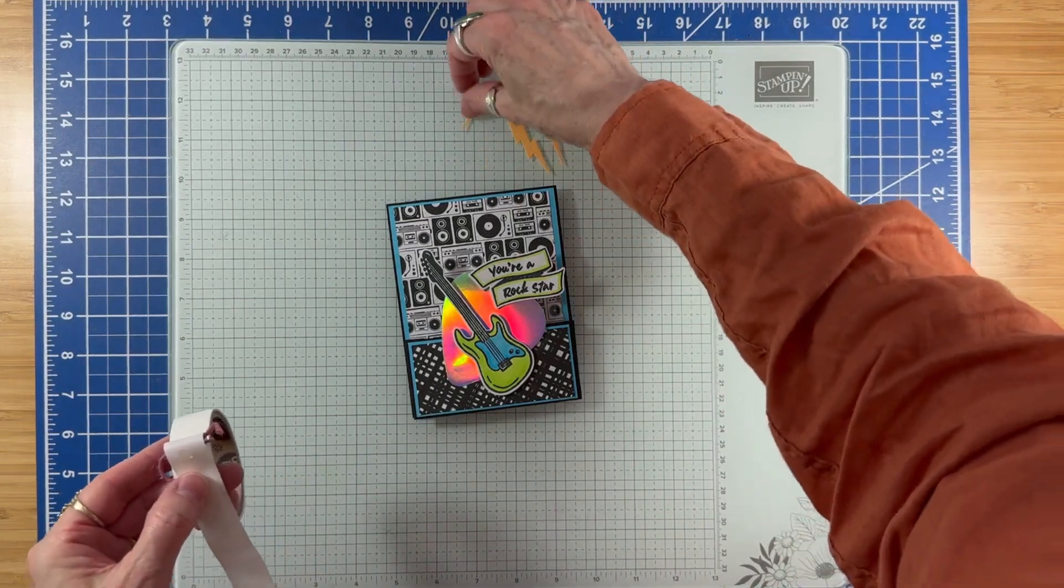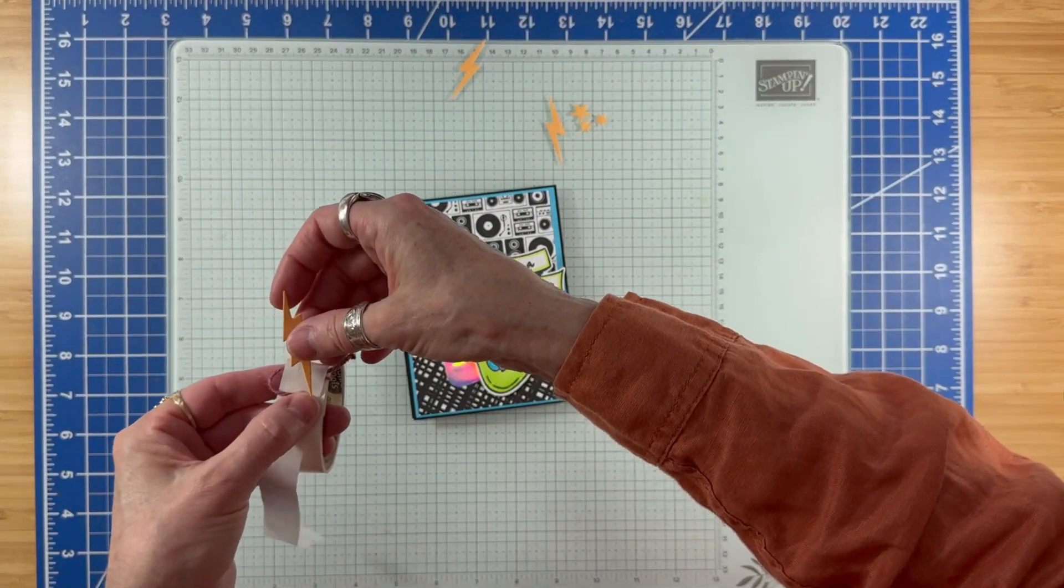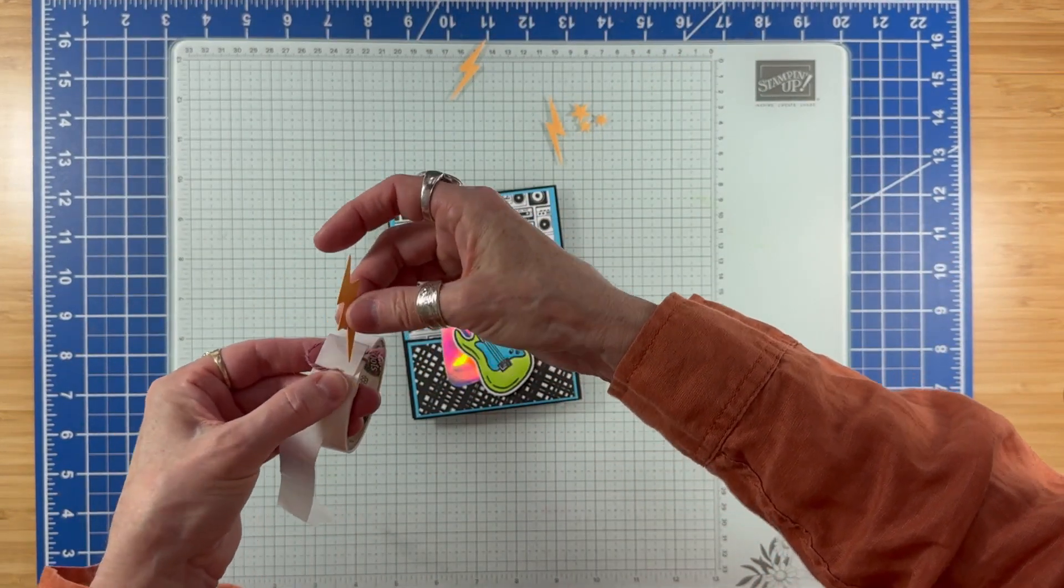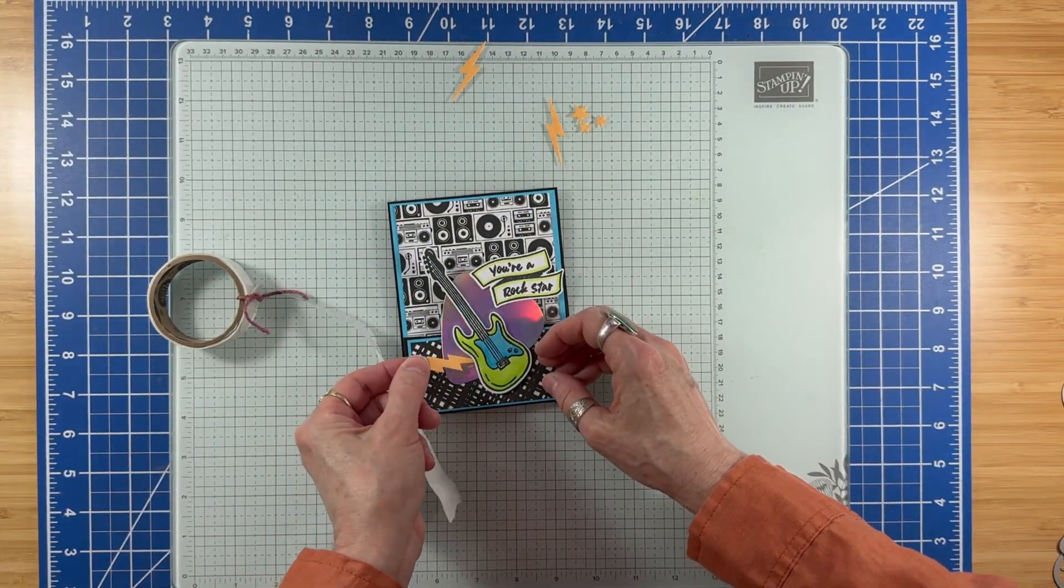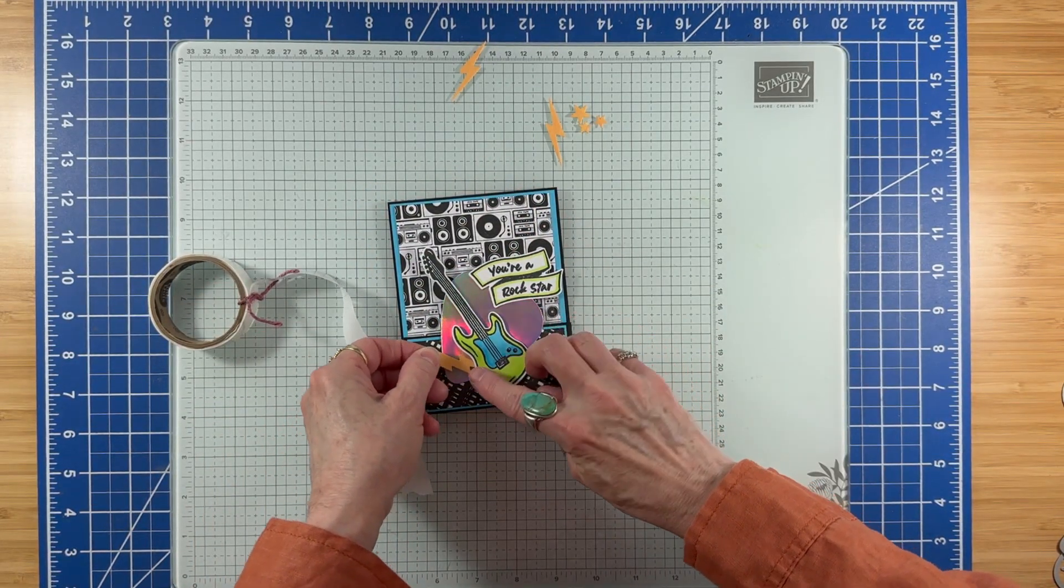I'm also going to put glue dots on the bottom of the lightning bolt and tuck that in under the guitar.